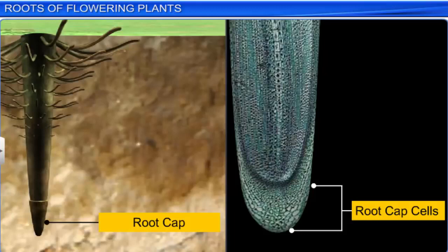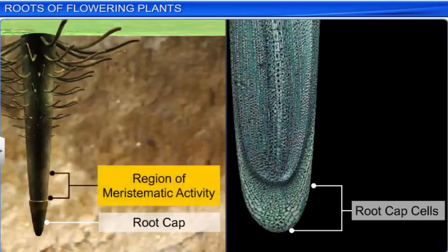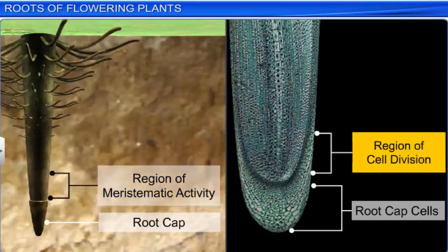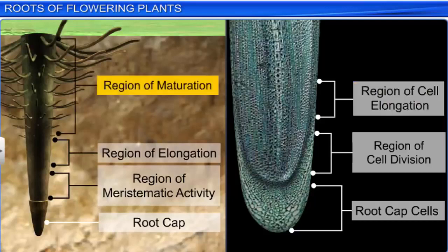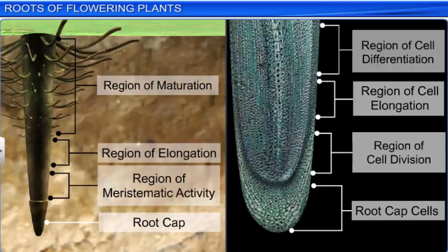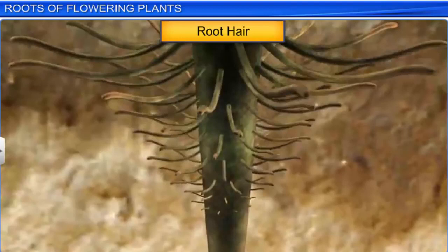The root cap is a sheath of cells present at the tip of the root that protects the root while entering the soil. The region of meristematic activity is just above the root cap, where the cells are very tiny and rapidly divide to produce new cells for growth. The region of elongation has cells that undergo rapid enlargement and elongation, causing the root to grow in length. The region of maturation has elongated cells that differentiate and mature, and primary tissues and root hairs develop here. Root hairs are fine, delicate structures that emerge from the region of maturation and assist in the absorption of water and minerals from the soil.